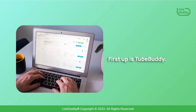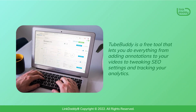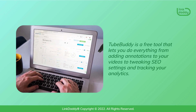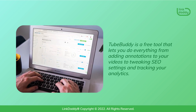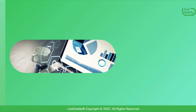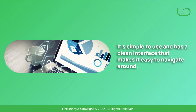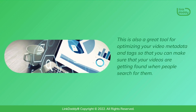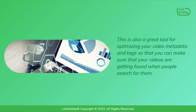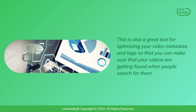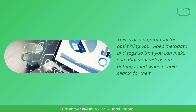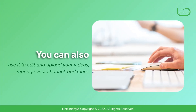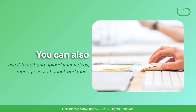First up is TubeBuddy. TubeBuddy is a free tool that lets you do everything from adding annotations to your videos to tweaking SEO settings and tracking your analytics. It's simple to use and has a clean interface that makes it easy to navigate around. This is also a great tool for optimizing your video metadata and tags, so that you can make sure your videos are getting found when people search for them. You can also use it to edit and upload your videos, manage your channel, and more.